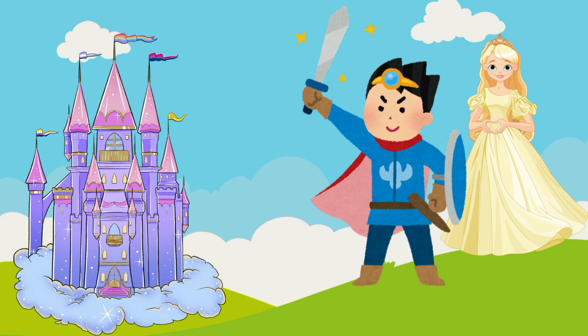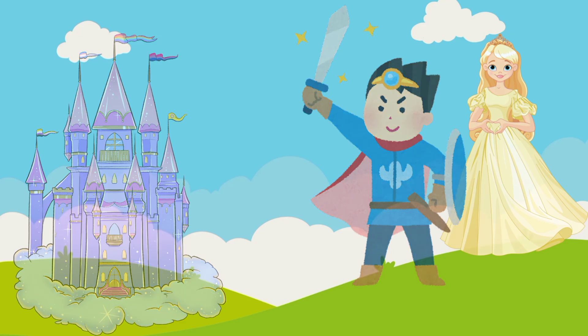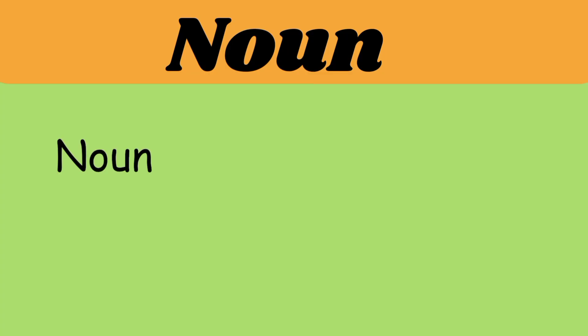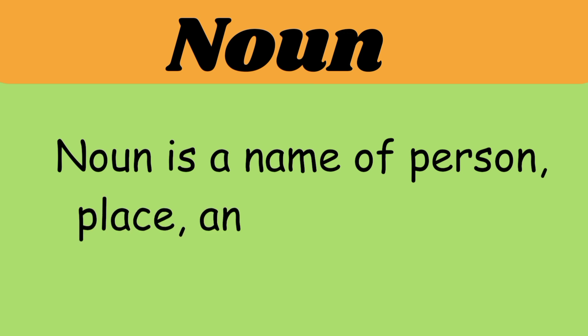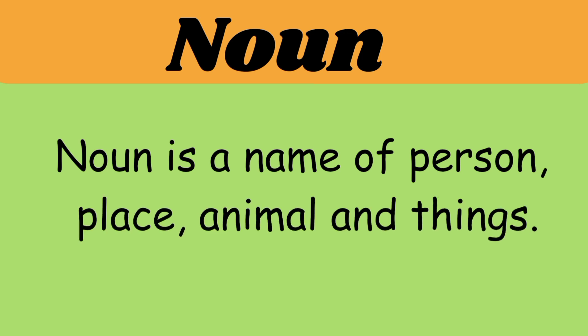Now let's understand the definition of noun. Noun is a name of person, place, animal and things.